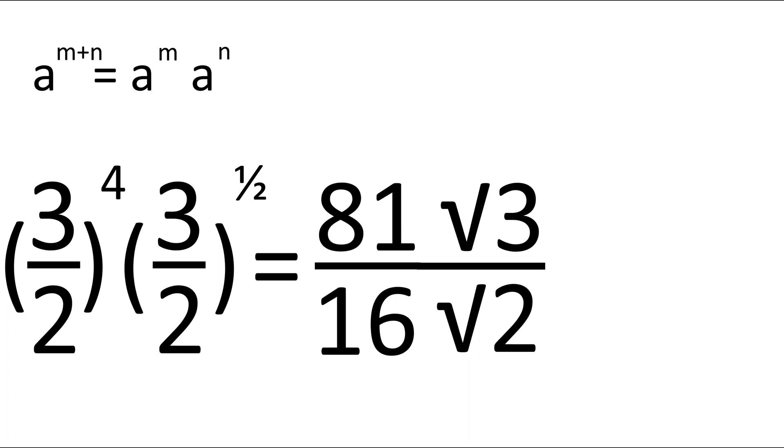In radical form we shouldn't have a square root at the bottom so we times top and bottom by root 2 and then we get 81 times root 6 over 32.